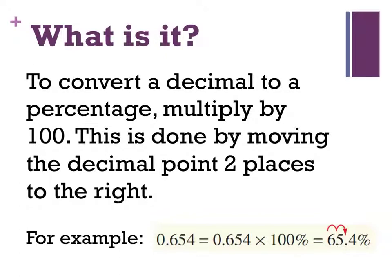To convert a decimal to a percentage is the opposite. I need to multiply by 100. This is done by moving the decimal point two places to the right. So say, for example, I had this decimal here. I multiply it by 100%, or I move the decimal two spots to the right. So that's 1, 2. And I come out with an answer of 65.4%. So when I convert from a percentage to a decimal, I move two to the left. From a decimal to a percentage, I move two to the right. That's not too bad. That's pretty easy, isn't it? Let's have a look at a few examples.